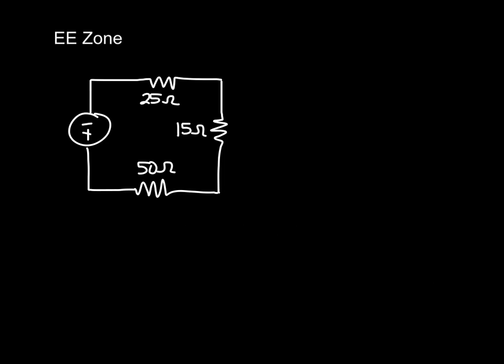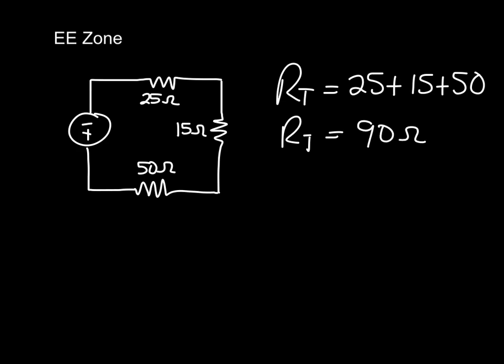And there we go. So now total resistance is easy. We can say that the total resistance is just 25 plus 15 plus 50, or RT is, what is that going to be? 25 plus 15 is 40, it looks like 90 ohms. So the total resistance of this circuit is 90 ohms.